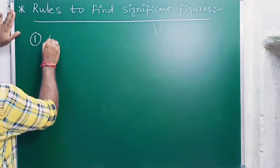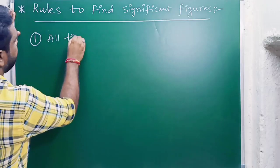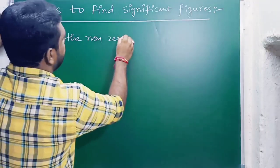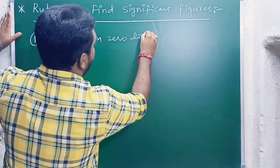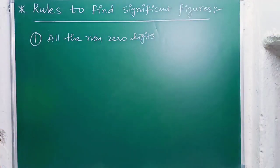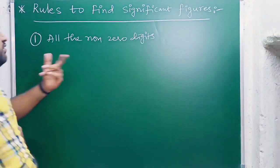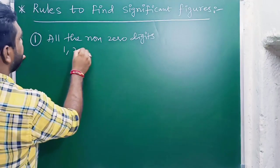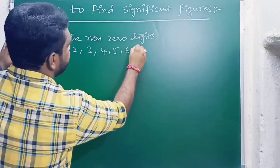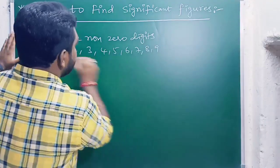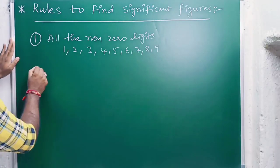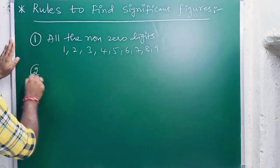Rule one: all the non-zero digits are significant. Non-zero digits means 1, 2, 3, 4, 5, 6, 7, 8, 9 — these are all considered as significant.